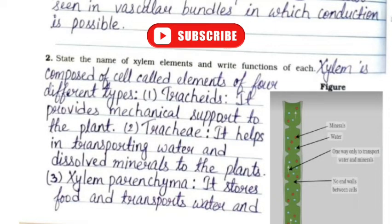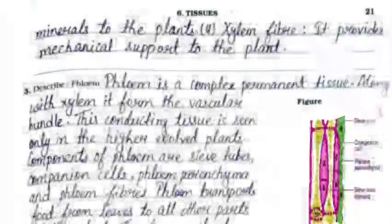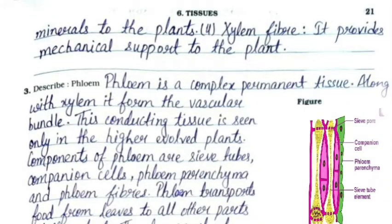Question 2: State the names of xylem elements and write the functions of each. Xylem is composed of four types of elements. First, tracheids - provides mechanical support to the plant. Second, trachea (vessels) - helps in transporting water and dissolved minerals to the plant. Third, xylem parenchyma - stores food and transports water and minerals. Fourth, xylem fibers - provides mechanical support to the plant.